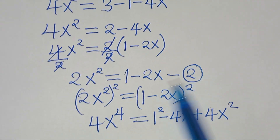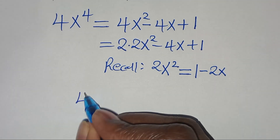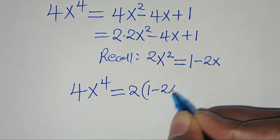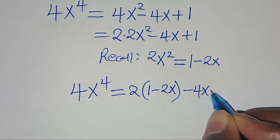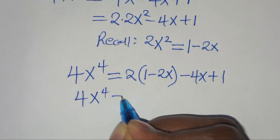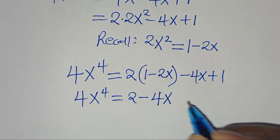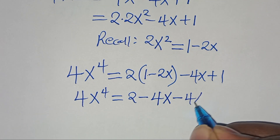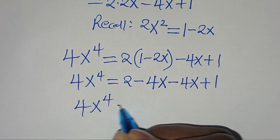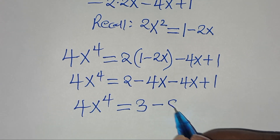Substituting 2x squared equals 1 minus 2x, we have 4x to the power of 4 equal to 2 multiplied by (1 minus 2x) minus 4x plus 1. Expanding: 4x to the power of 4 equals 2 minus 4x minus 4x plus 1. Collecting like terms: 4x to the power of 4 equals 3 minus 8x.